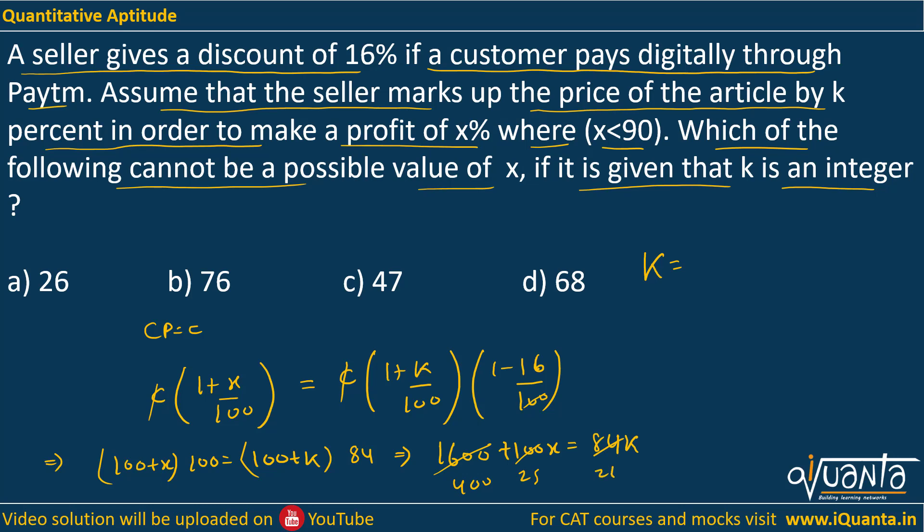If I again take 25 common I will be getting 25 then 16 plus x upon 21. I need to guess the value of x. We are given that k should be an integer, so we have to cancel this 21 from the denominator.